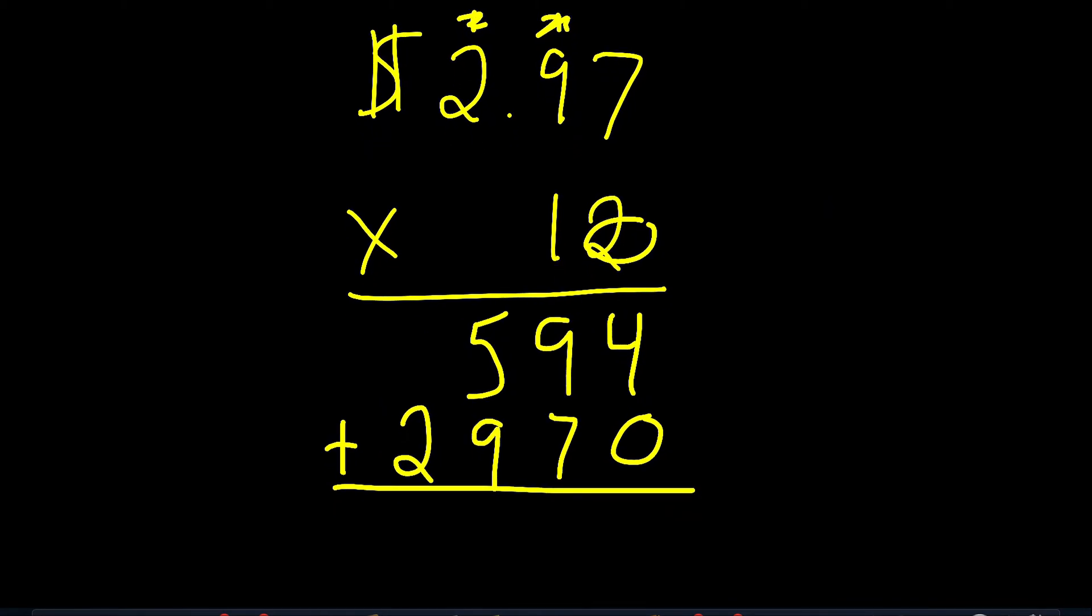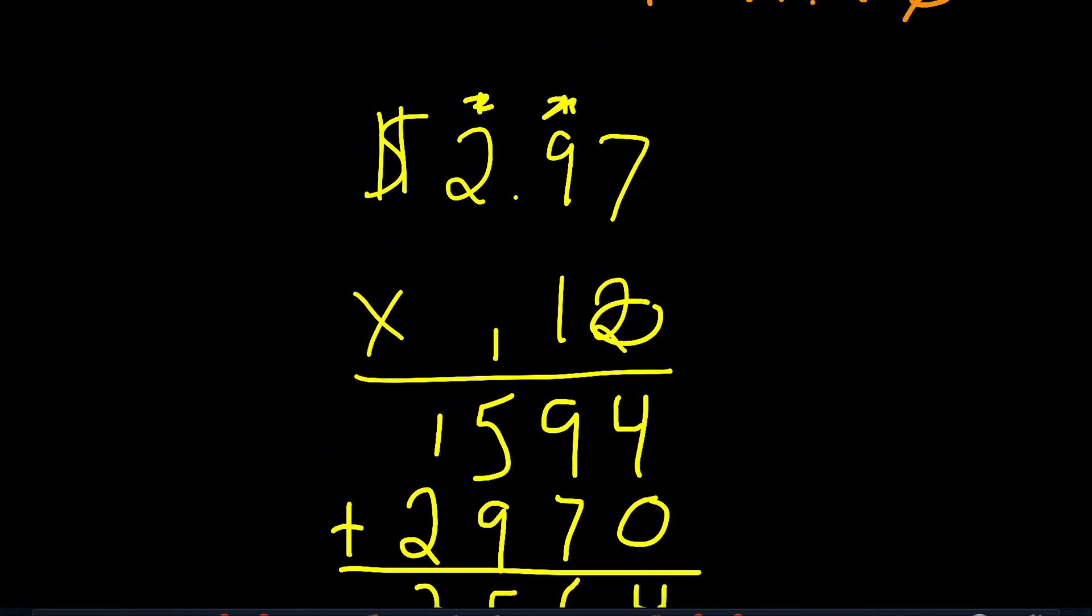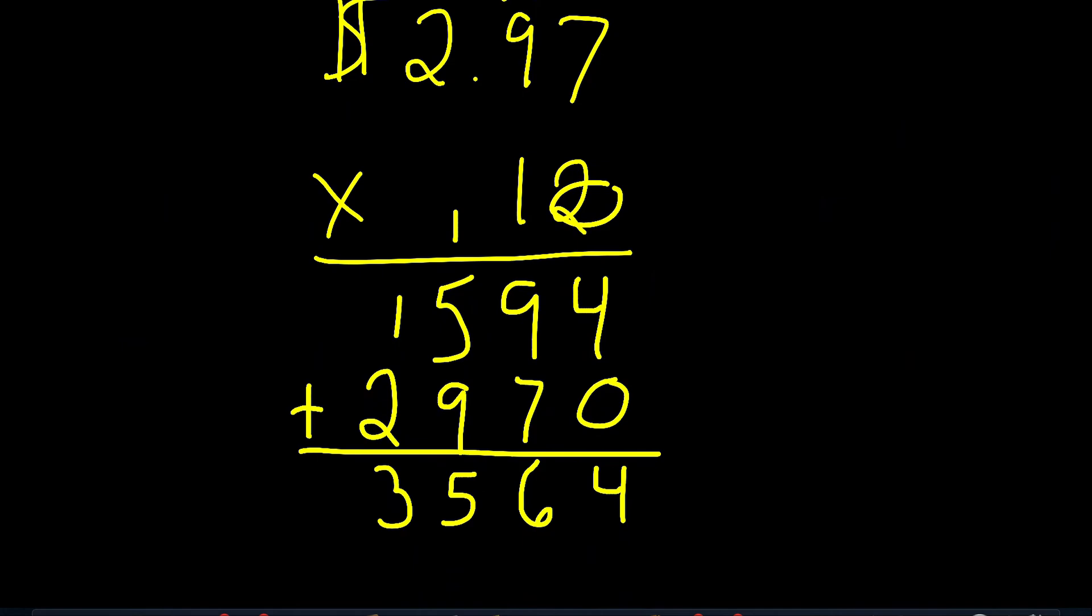So notice when we do that, you should get something that looks very similar to what I have here. And I got $3,564. But of course, I have to adjust it because of the decimal. I have to remember it now. So I go 1, 2, and then I go 1, 2. And then I put in my answer. So if you got $35.64, way to go.